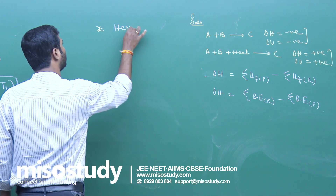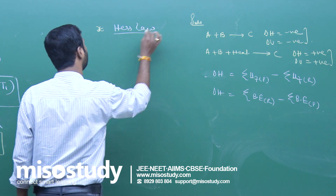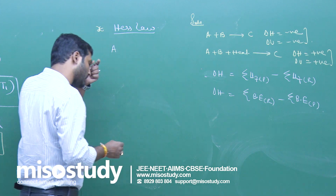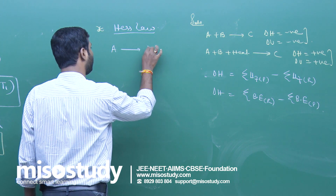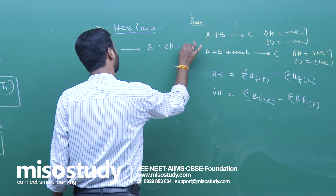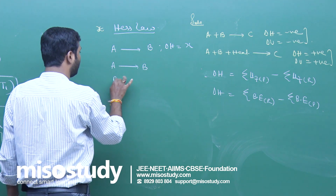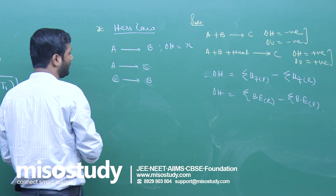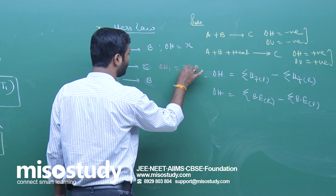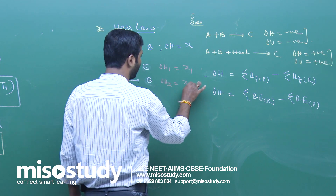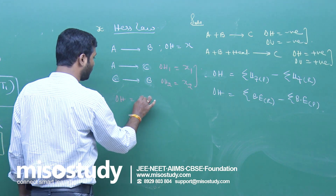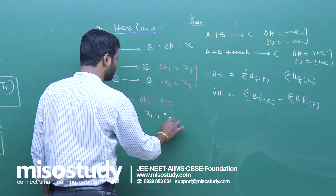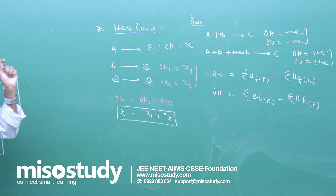The next topic is Hess's Law. If a reaction proceeds in one step or more than one step, the total energy change is the same. For example, if A gives B directly with delta H equal to x, and A goes via C to B with delta H1 equals x1 and delta H2 equals x2, then by Hess's Law: delta H equals delta H1 plus delta H2, so x equals x1 plus x2.